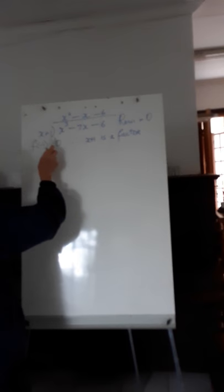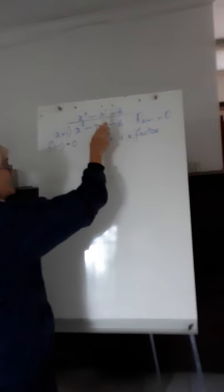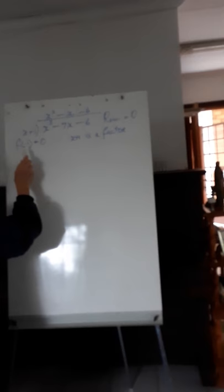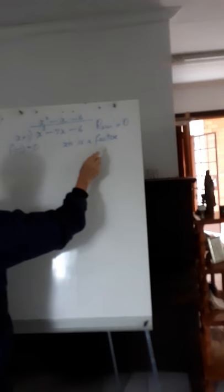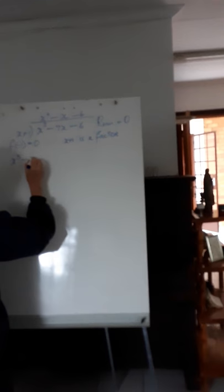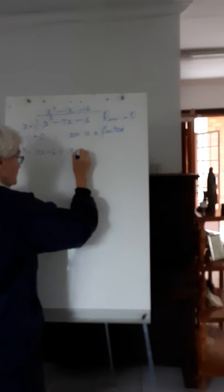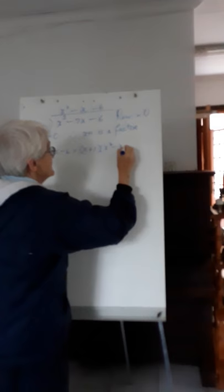When x cubed minus 7x minus 6 is divided by x plus 1, the quotient is x squared minus x minus 6 and the remainder is 0. Because f of minus 1 is equal to 0, x plus 1 is a factor. We can now say that x cubed minus 7x minus 6 is equal to x plus 1 into x squared minus x minus 6.